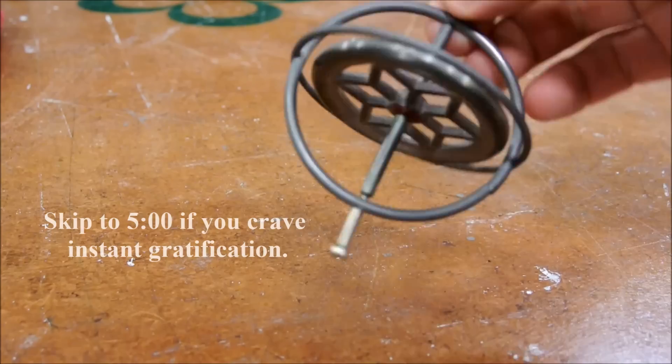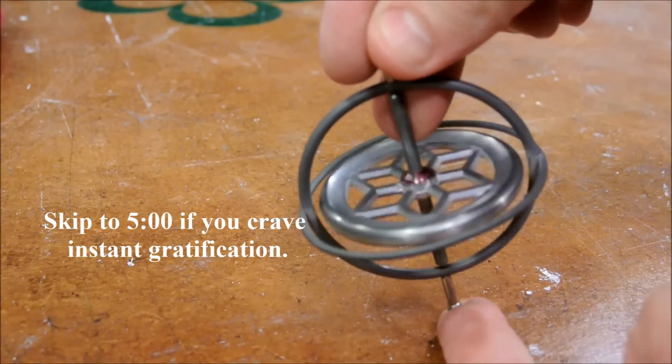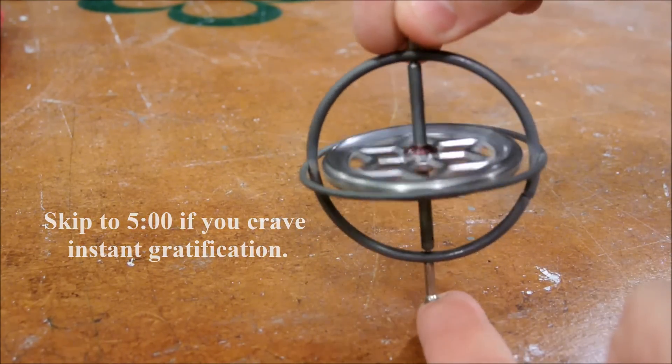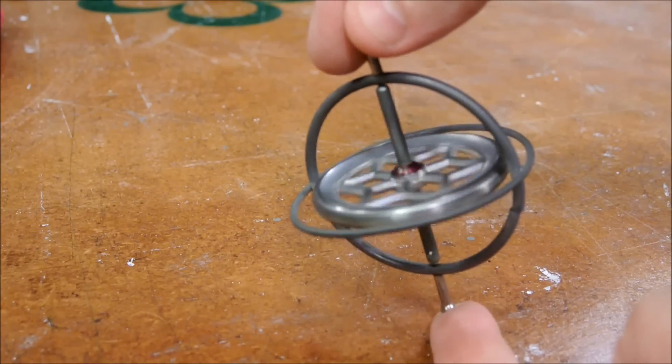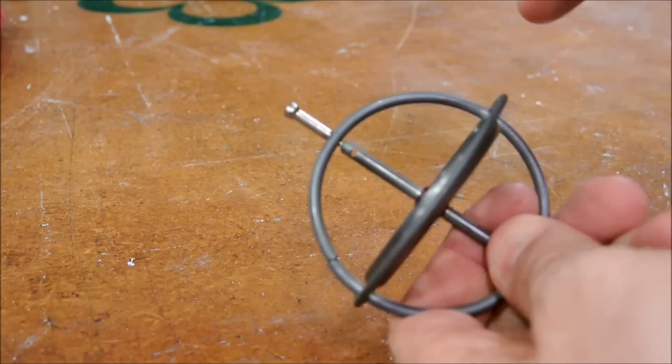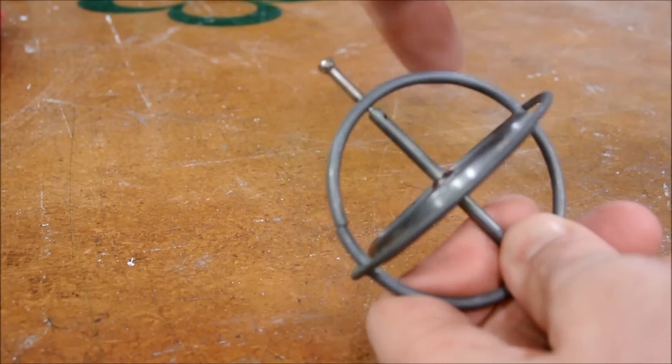This is a toy gyroscope, and really what it is is just a wheel that's restricted to one axis about which it rotates. What you can do is stick a string in this little hole and wrap it around the spindle.